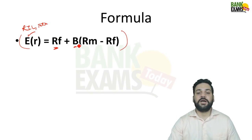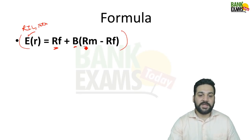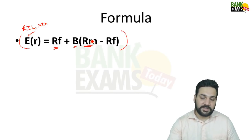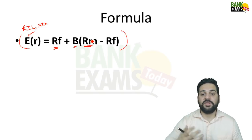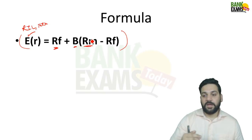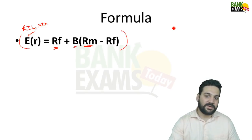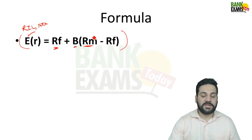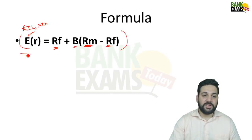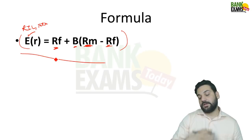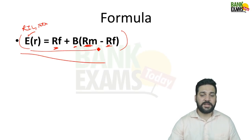β is the beta, which I explained in previous classes. Rm is the expected market return — for example, if you invest in an index fund like the S&P 500, the return you'd get. Rf is again the risk-free return. You'll be able to understand these by solving the questions.